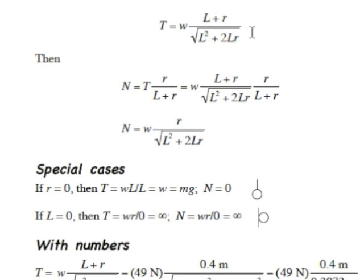Considering special cases: what if the radius R is infinitely small — essentially a point mass hanging? If R equals zero, the tension becomes W times L over the square root of L², which is just W. And the normal force goes to zero. That makes sense: a point mass hangs straight down with no need to push away from the wall, so there's no normal force and the tension simply equals the weight.